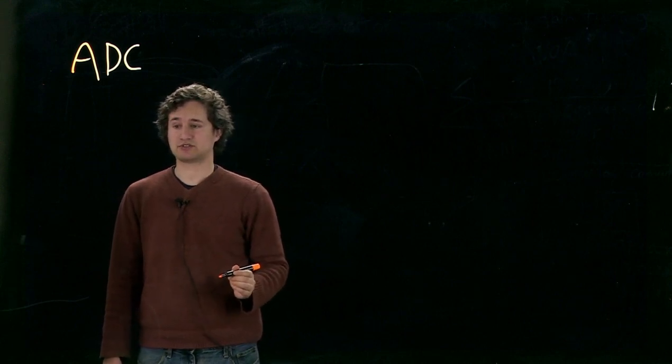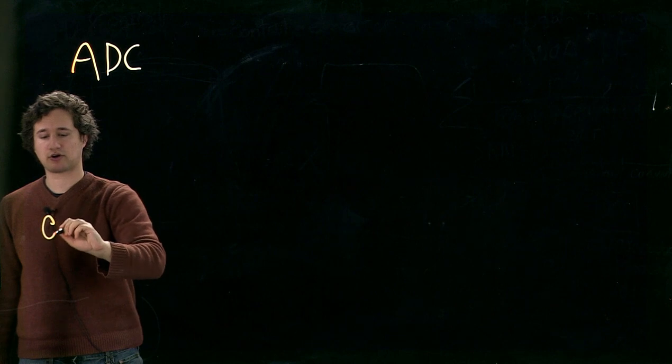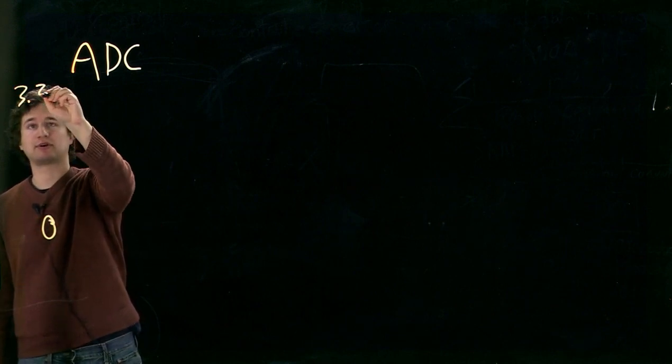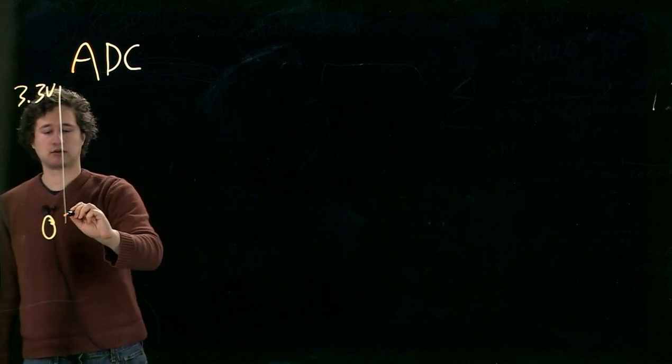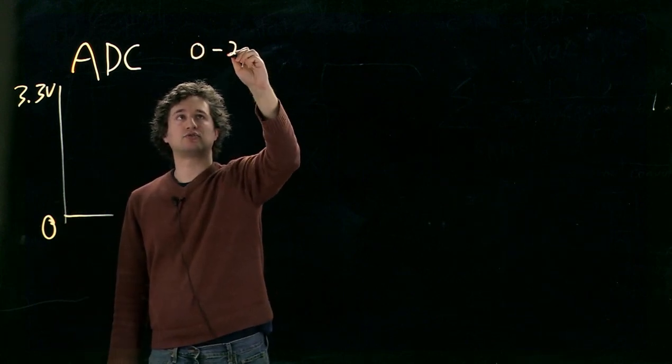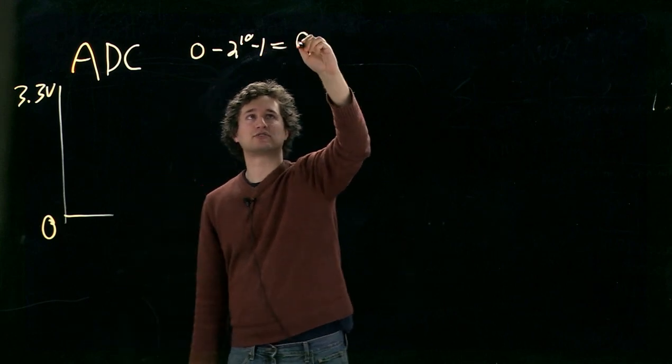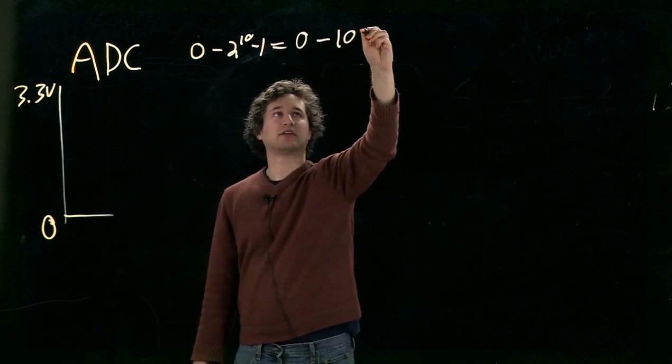This is a 10-bit ADC, so that means every voltage between 0 and 3.3 volts can be converted into a number between 0 and 2 to the 10th minus 1, so this is 0 to 1023.